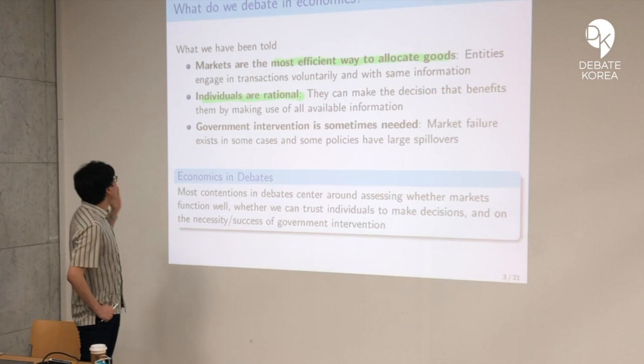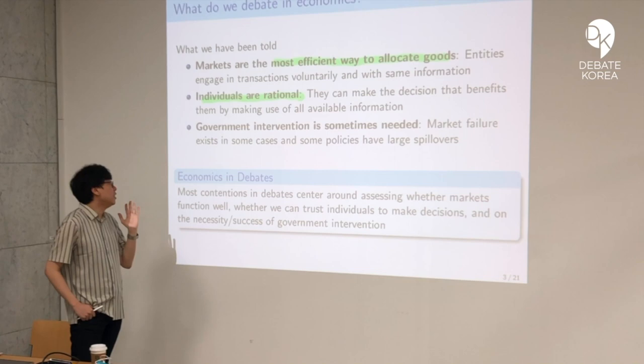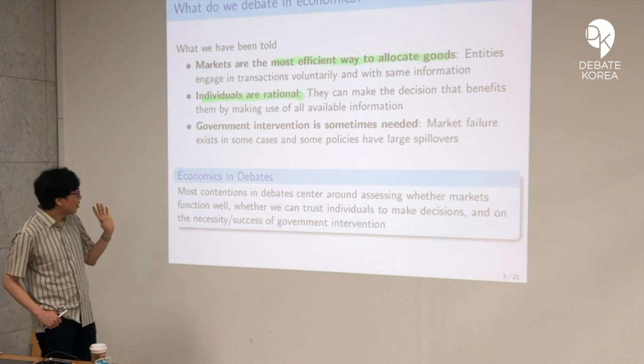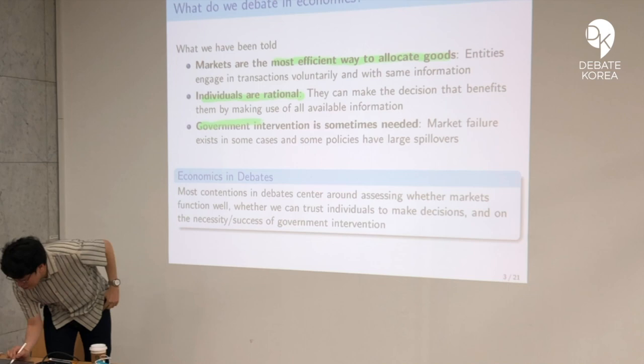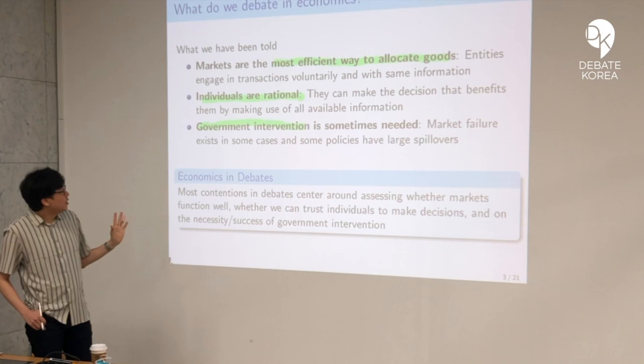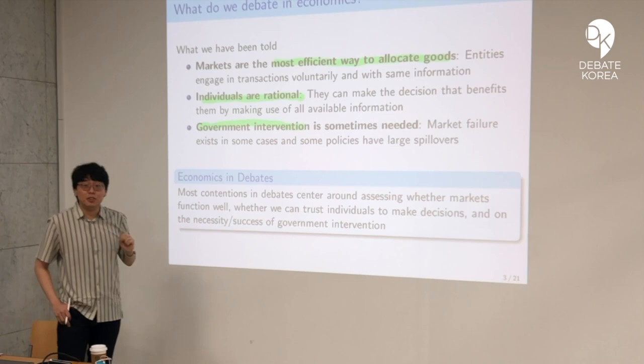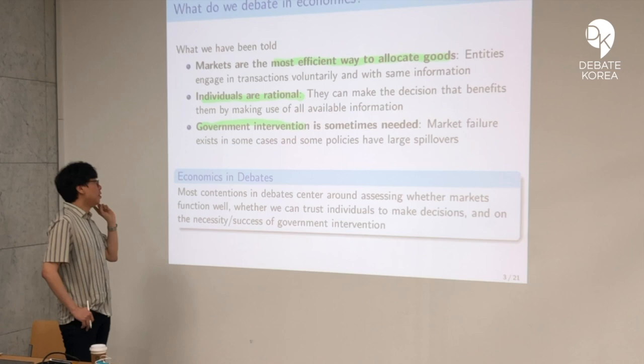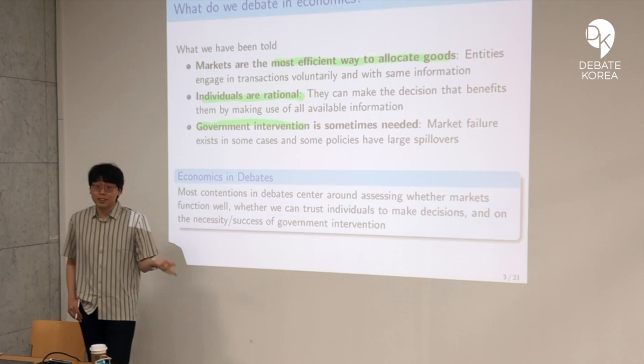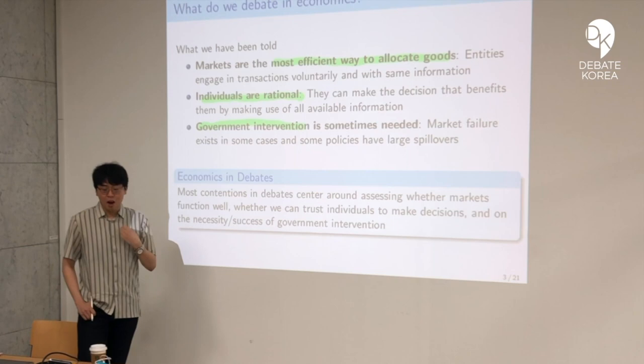But there are many cases where the first two assumptions are not satisfied, and that's when you want some level of government intervention. Government intervenes in cases where market failure exists. Governments can also intervene through policies with large spillovers, like fiscal policies — what do you do with taxes — and monetary policies — how much money supply do you want in your society. Central banks regularly meet, once a month or once a quarter, to determine the key interest rate, which determines money supply and inflation rates.